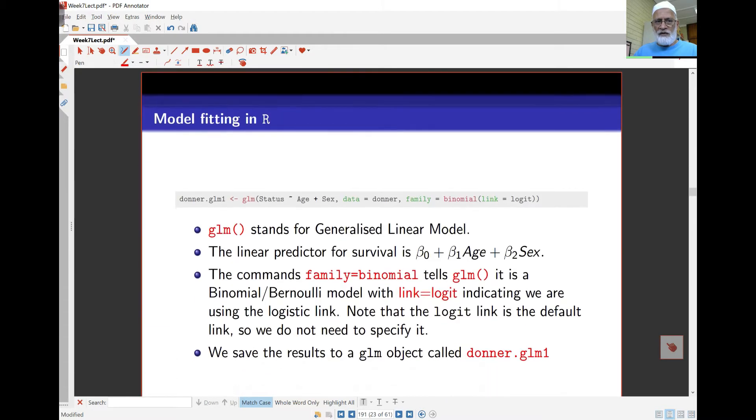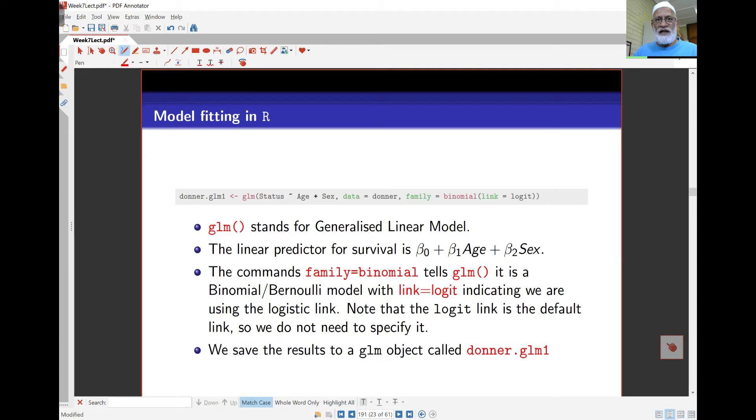In R, the model is fitted by the glm command. glm stands for generalized linear model. The same syntax follows: my response is status, that's binary, that needs to be 1, 0. I have age of the person plus sex, with the data command as data equals data frame.